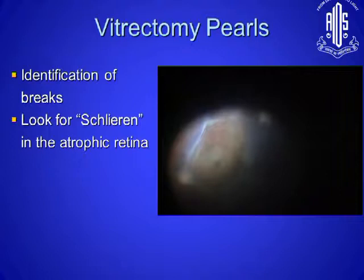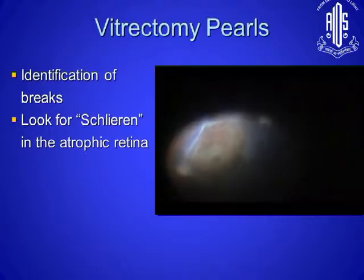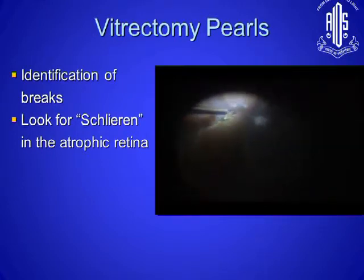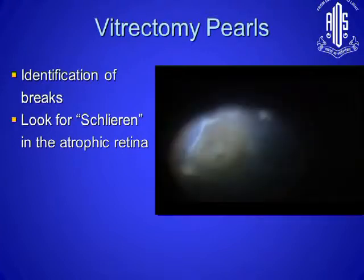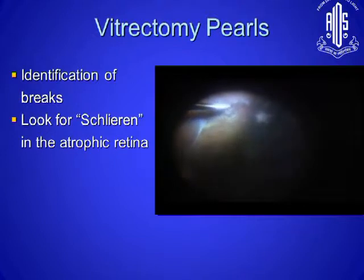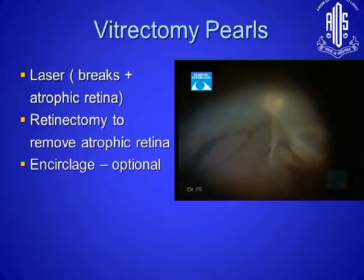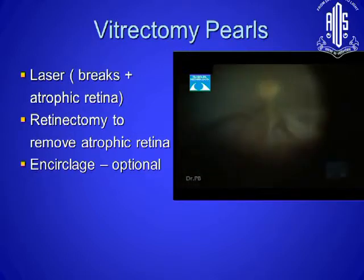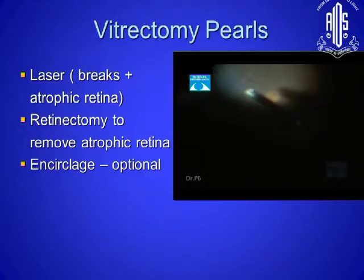Identification of breaks during surgery may be possible. If you look for areas of atrophic retina, you just take a flute close to those areas and you might be able to get something like a schlieren, which could indicate the primary break — probably the site of onset of the detachment. As in ARN, we have large areas of retina which are completely gliotic, so you need to do a good retinectomy to prevent the retina from re-detaching, and that's the posterior pole.